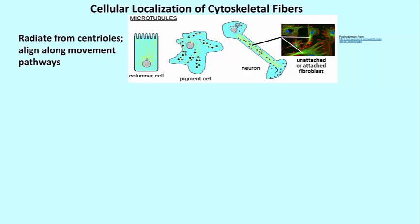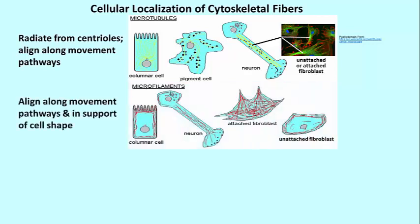Here are cells showing where the microfilaments are. In the columnar epithelial cell, the microfilaments are organized roughly around the cell in what's called the cell cortex — the cytoplasm immediately below the cell membrane. If this is a cell lining your small intestine, the structures at the top of the cell are microvilli, and the actin filaments are not only in the cortex of the cell as a whole but also penetrate the microvilli.